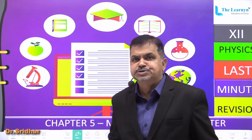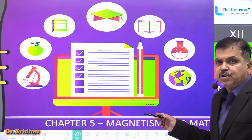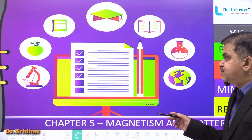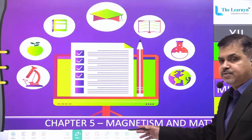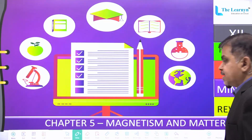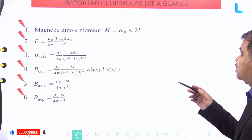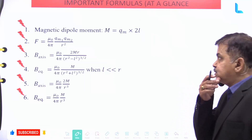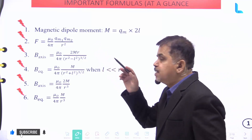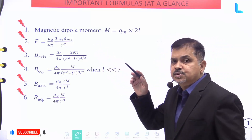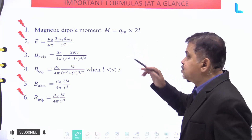Let us do a last minute revision on the subject of physics for class 12 CBSE. We take up chapter number five, that is Magnetism and Matter. Here we cover some important formulas at a glance. Number one, the magnetic dipole moment, given by M equal to qm into 2l.